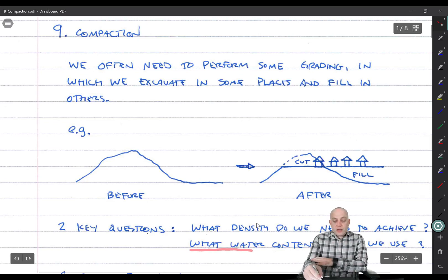And then the other one is what water content should we use? It turns out that the water content has a really important impact on our ability to obtain a particular dry density. And that's where the unsaturated soil mechanics comes in. So at the end of this lecture, you should have an appreciation for why the water content at the time of compaction is such an important consideration.